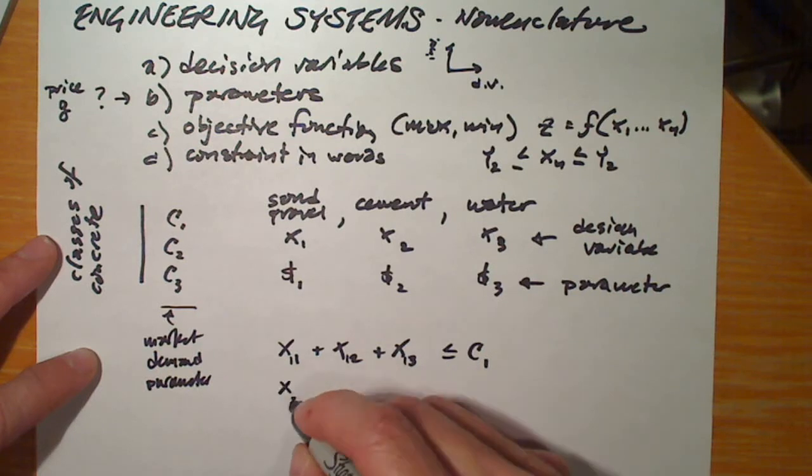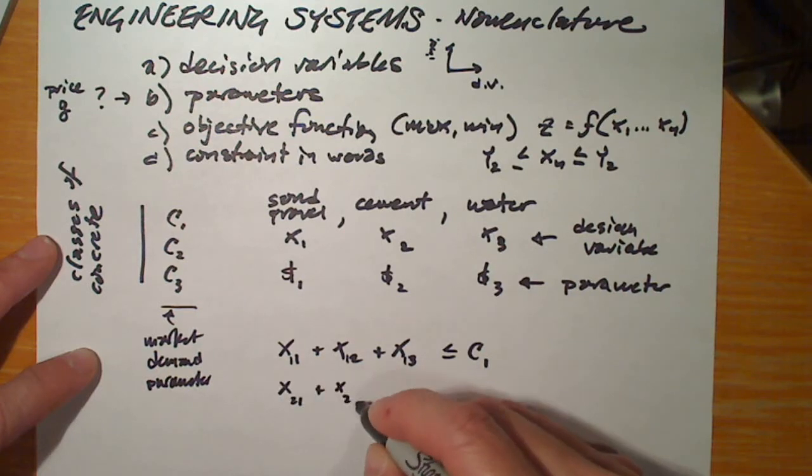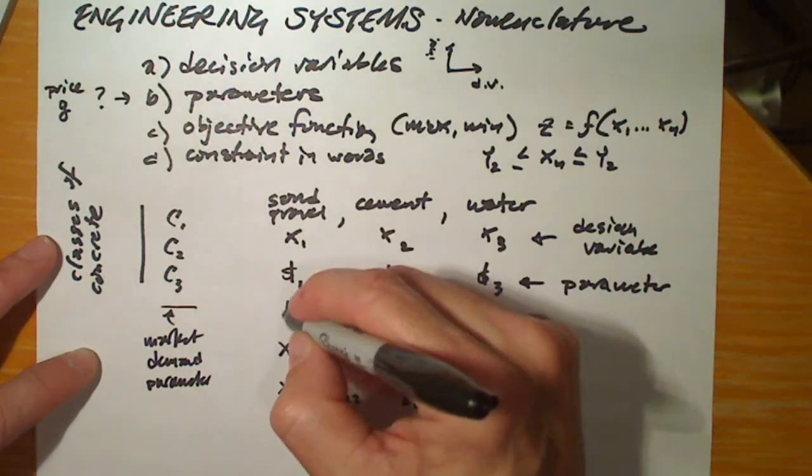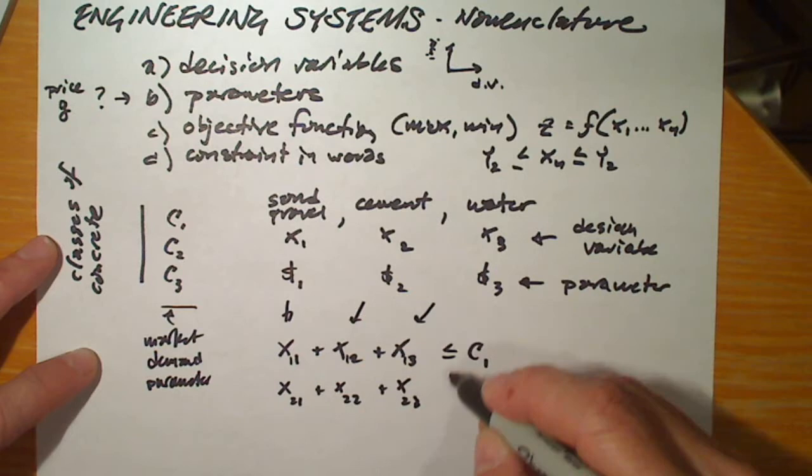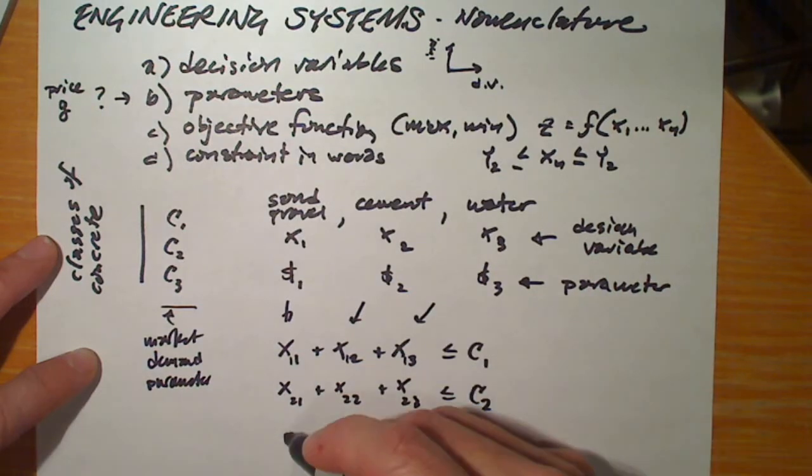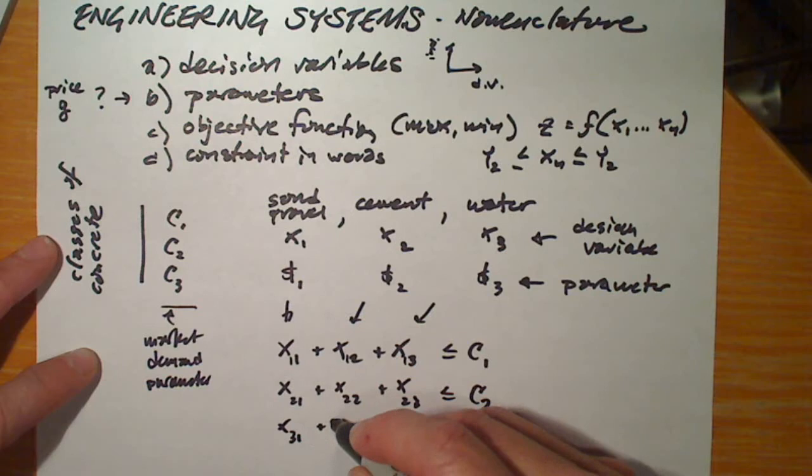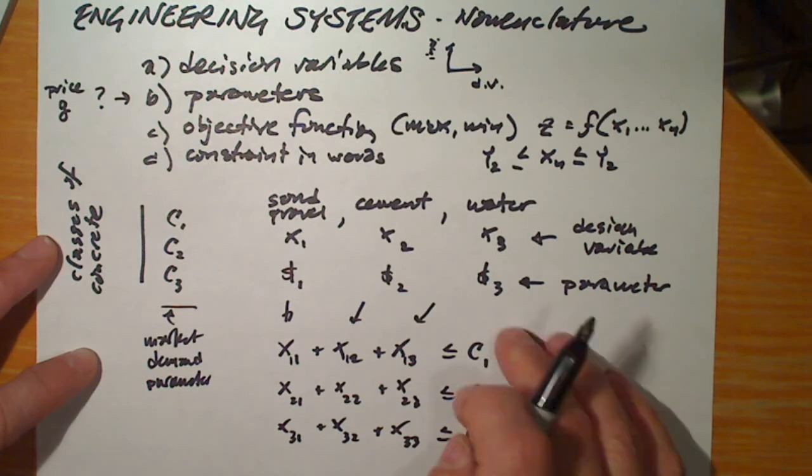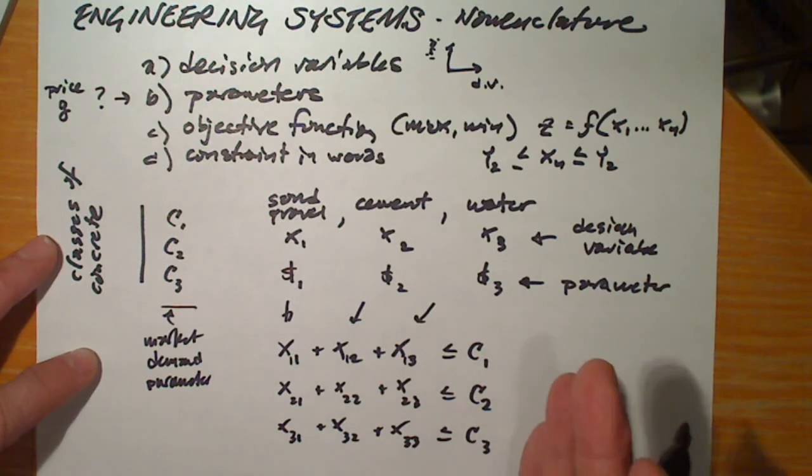That means we must have also X2,1 plus X2,2 plus X2,3, the sand, cement, and water for this mid-range concrete. X3,1 plus X3,2 plus X3,3, and these tons must be less than or equal to the amount of concrete that can be sold in any given period, like a week or a month.